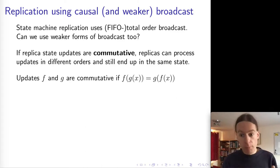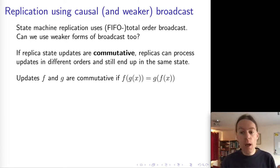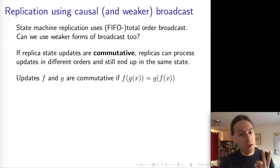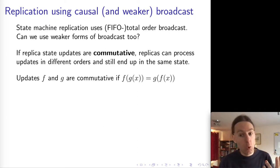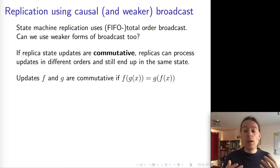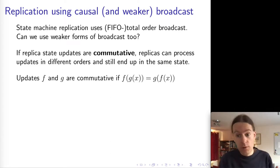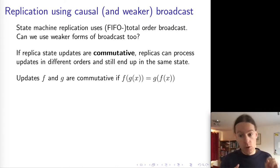One concept we need for this is commutativity. Two updates are commutative if you can apply them in either order — either apply F then G, or G then F — and the end result is the same no matter the order. Not all updates are commutative; we have to specifically design the algorithm for updates to be commutative. But it is possible to design updates in such a way that they are commutative.